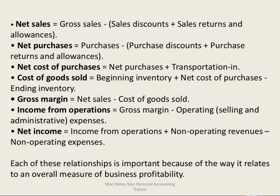Key relationships: net sales equals gross sales minus sales discounts and sales returns and allowances. Net purchases equals purchases minus purchase discounts and purchase returns and allowances. Net cost of purchases adds transportation in. Cost of goods sold equals beginning inventory plus net purchases minus ending inventory. Gross margin equals net sales minus cost of goods sold. Income from operations equals gross margin minus operating expenses. These relationships are important for measuring overall profitability — memorize them and understand the new terminology as it relates to a merchandise-based company.